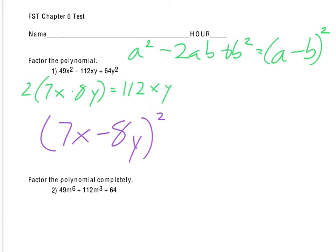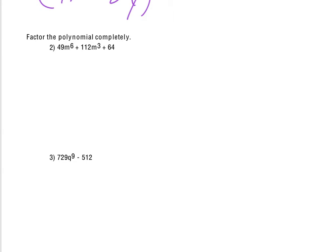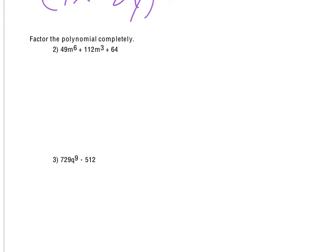And so we do get the 112xy from there, verifying that yes, it is that square of a binomial pattern. Alright. This is unfortunate, looks like number two is almost the same as number one, actually a little bit easier. So notice again that 49m to the sixth and the 64.